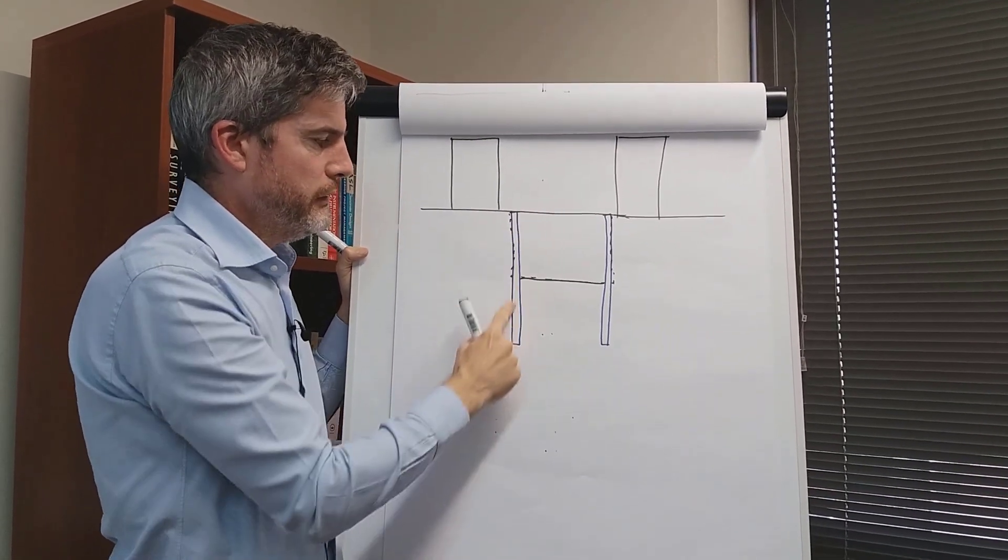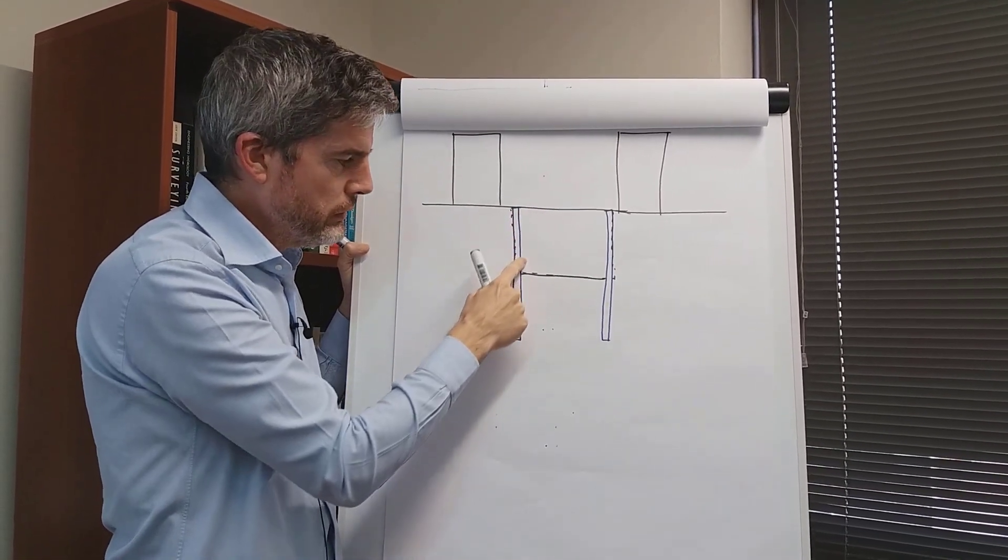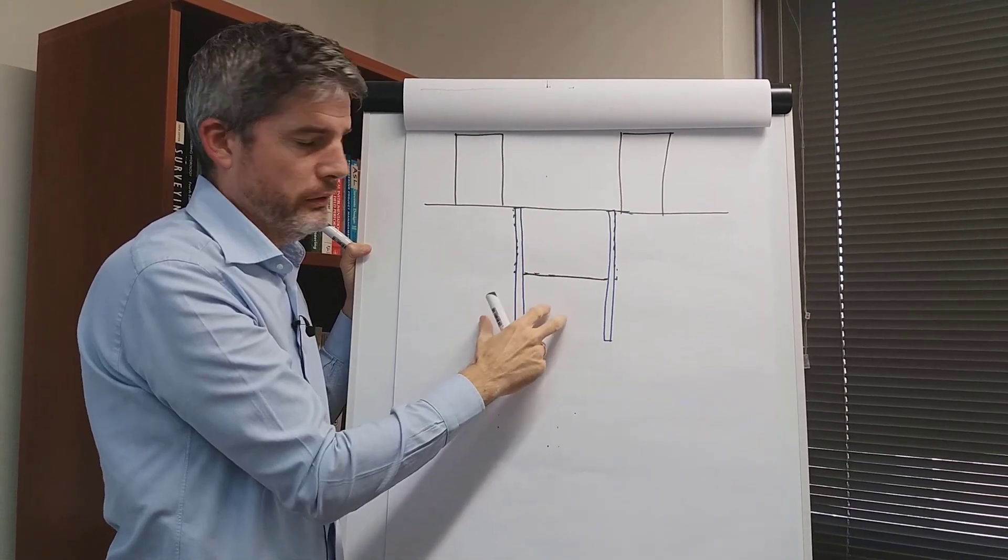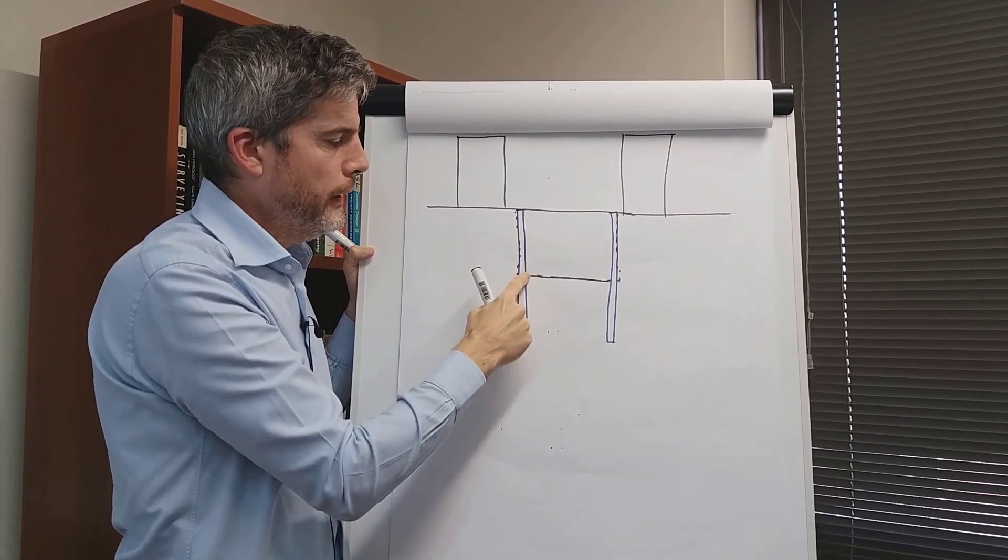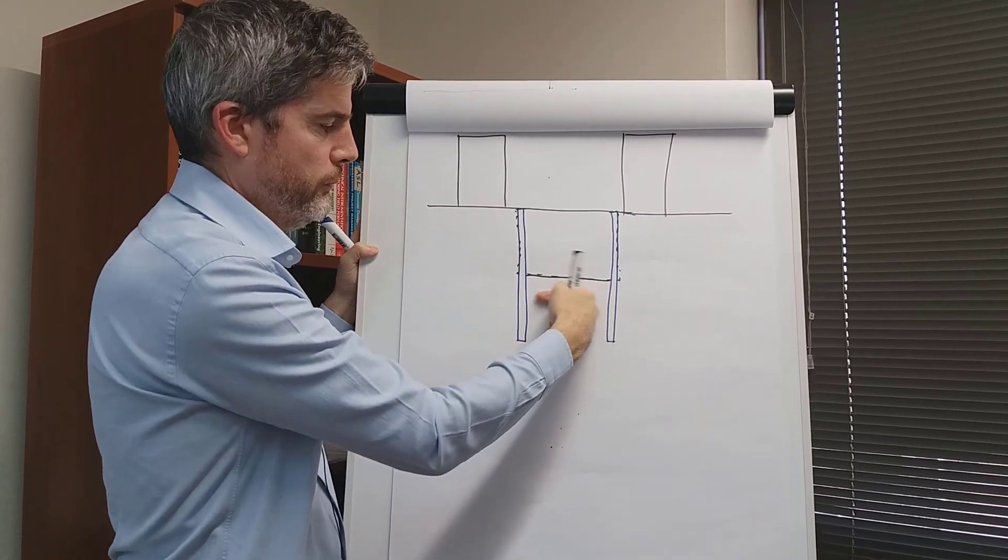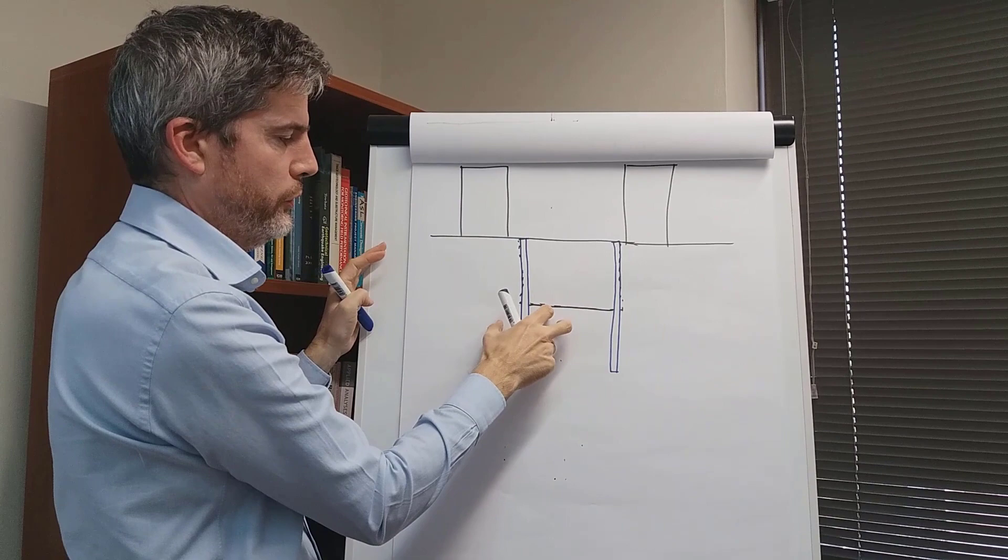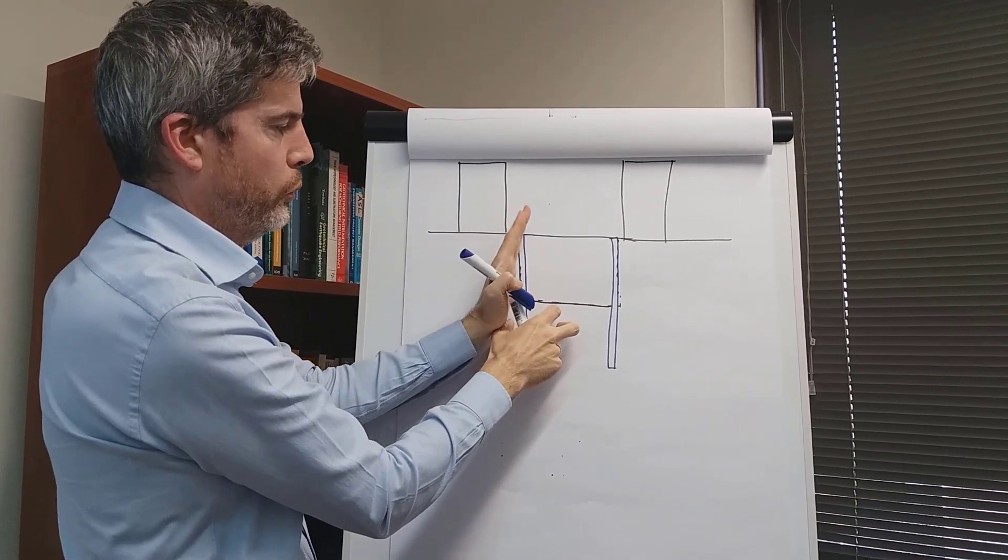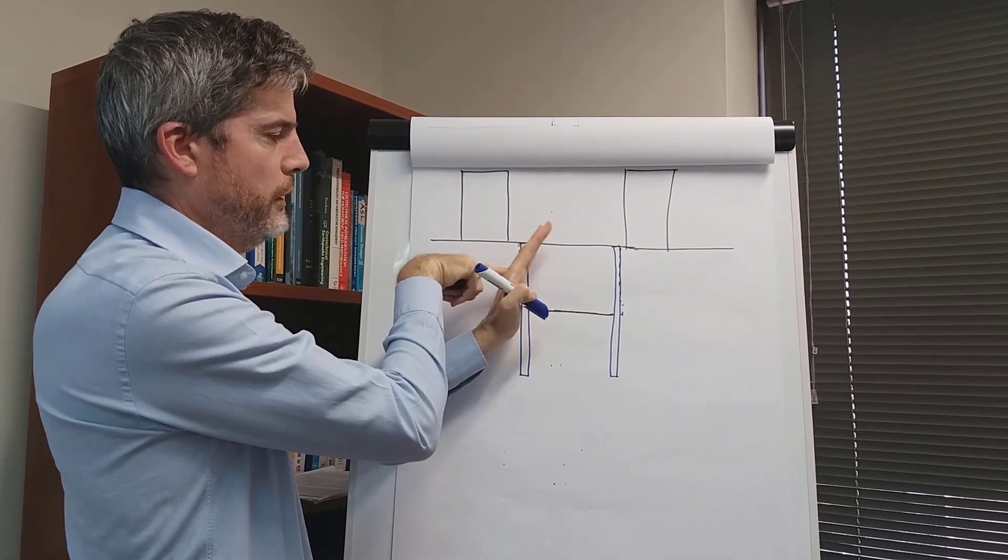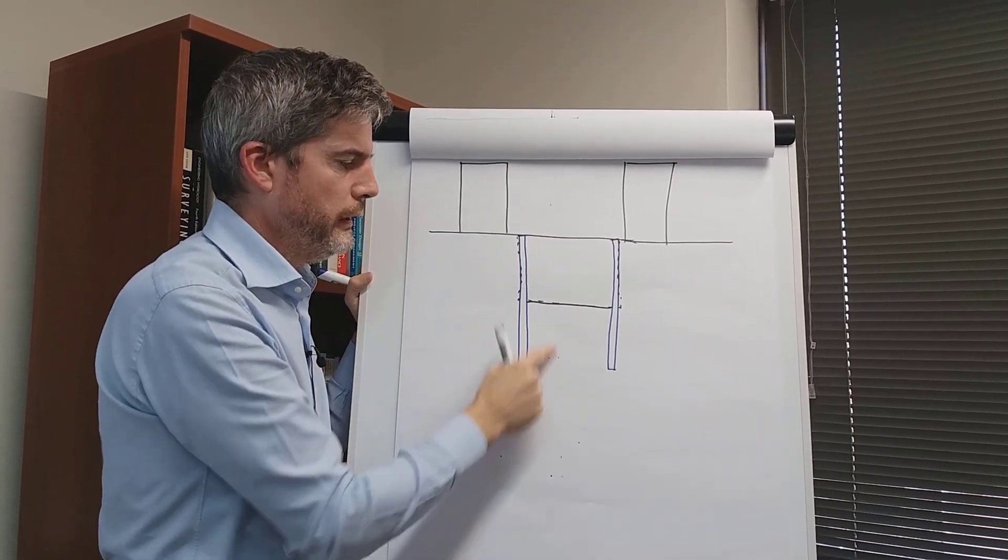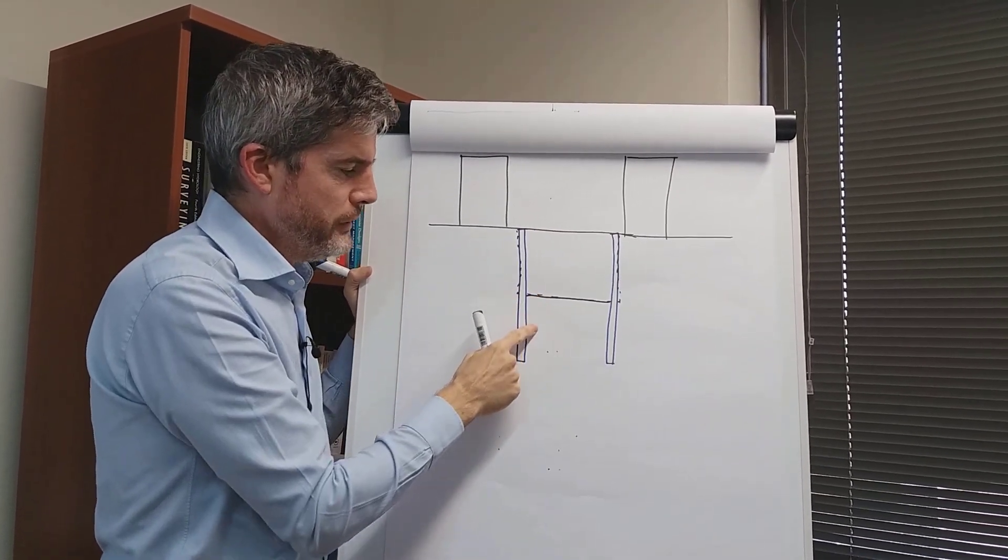Now it can act as a cantilever, as an embedded cantilever wall, to a certain depth—maybe to about four or five meters depending on the strength of the soil. Then it gets all its resistance from the soil here—you get passive resistance which holds the wall. So the wall will bend a little bit because of the pressure behind it, but it will be held by the soil around here. But of course there's a limit to how deep you can go.